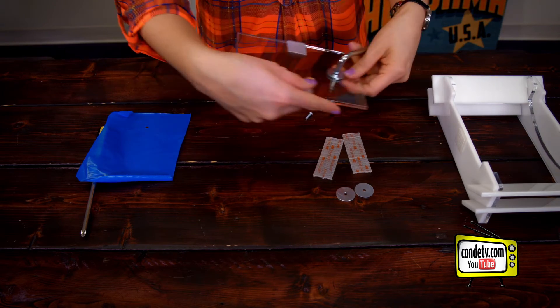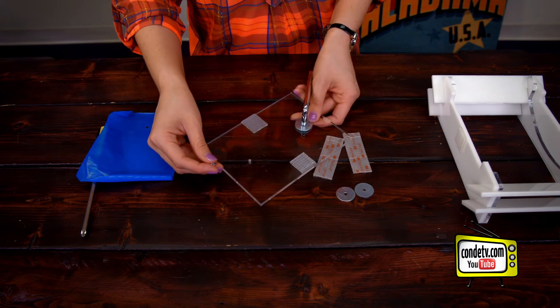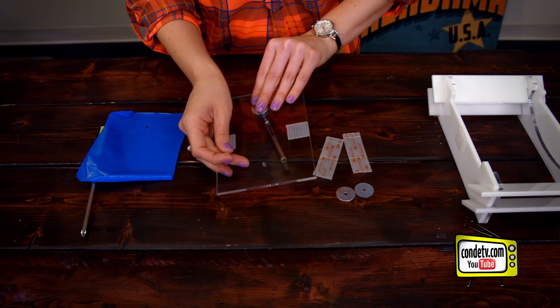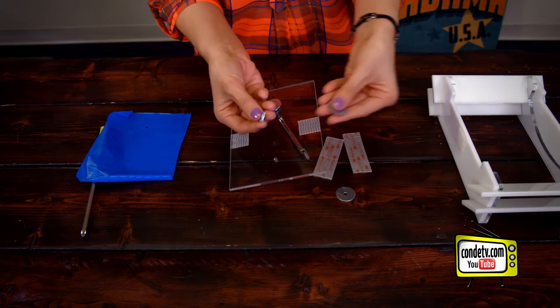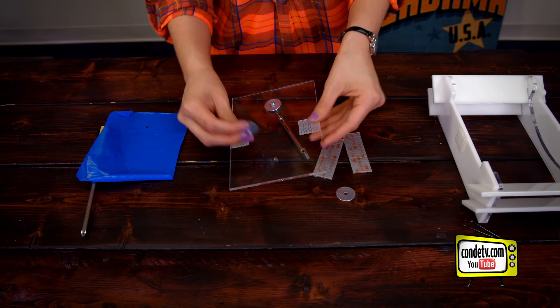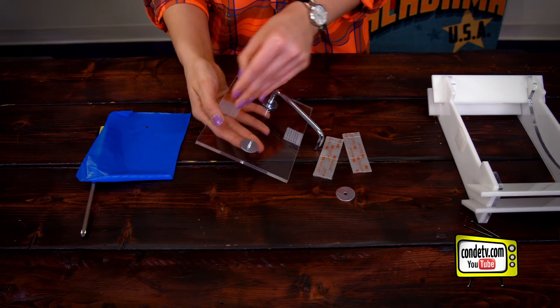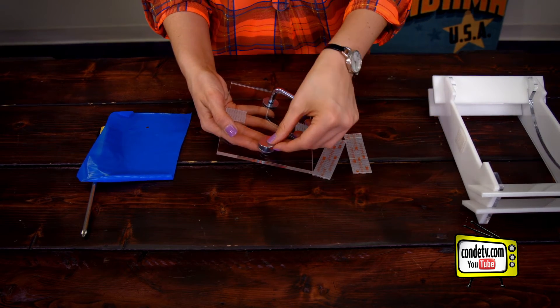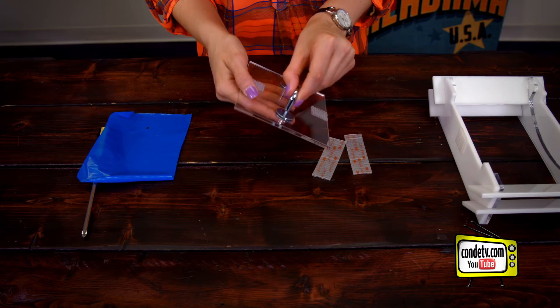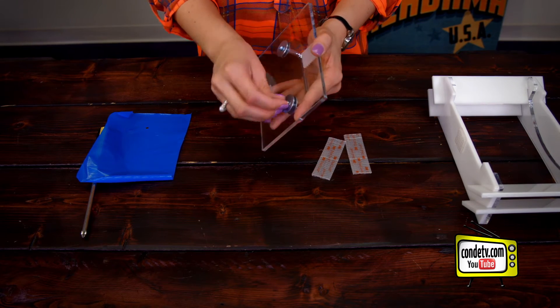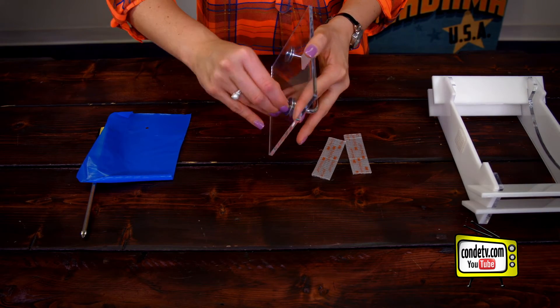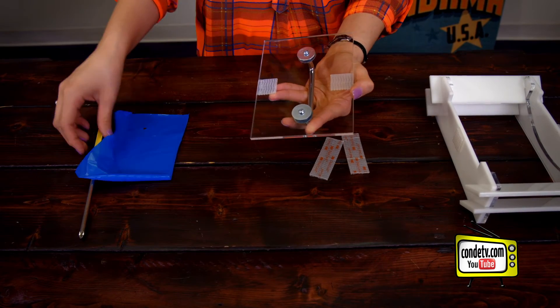I'll leave that right there while I line up my washer with my screw, slide that in, take my other washer, put it right there on top, and again just make sure that screw is finger tight.